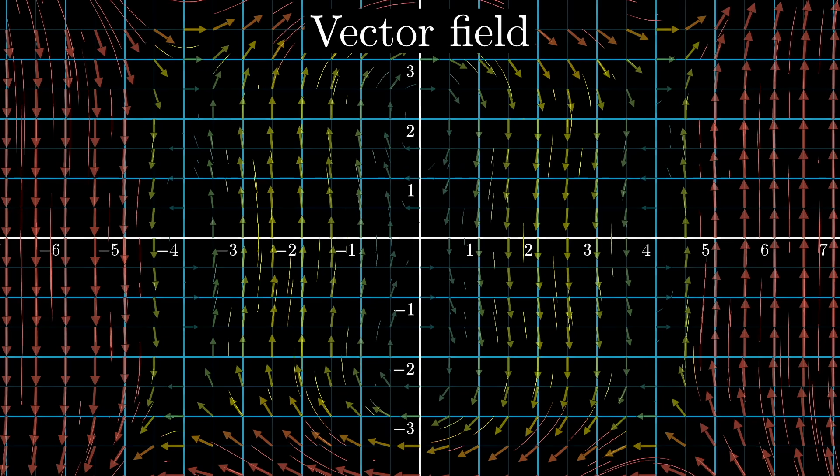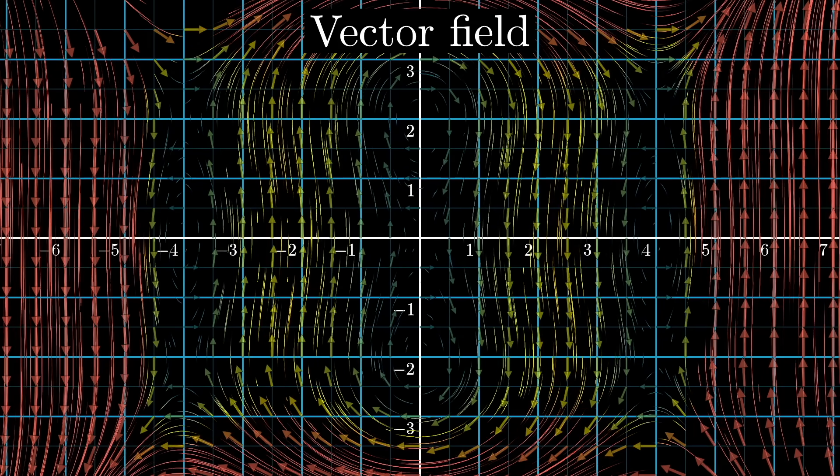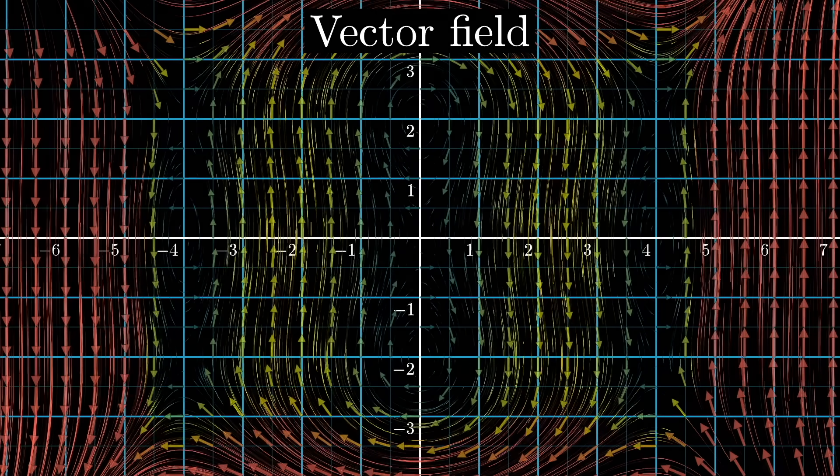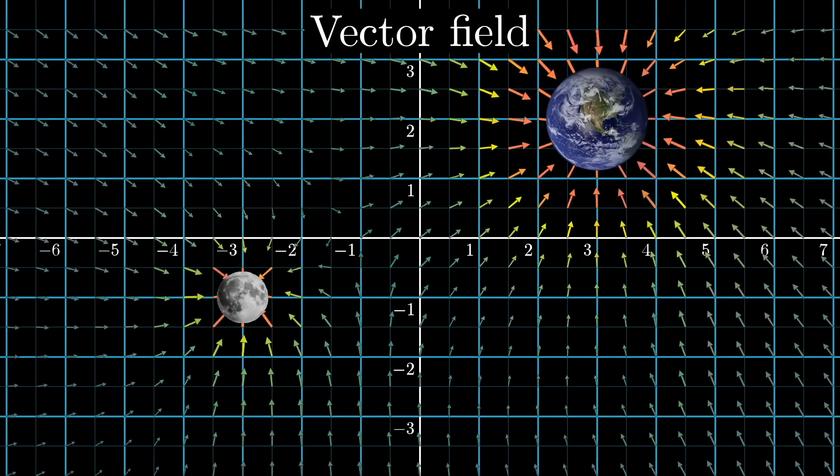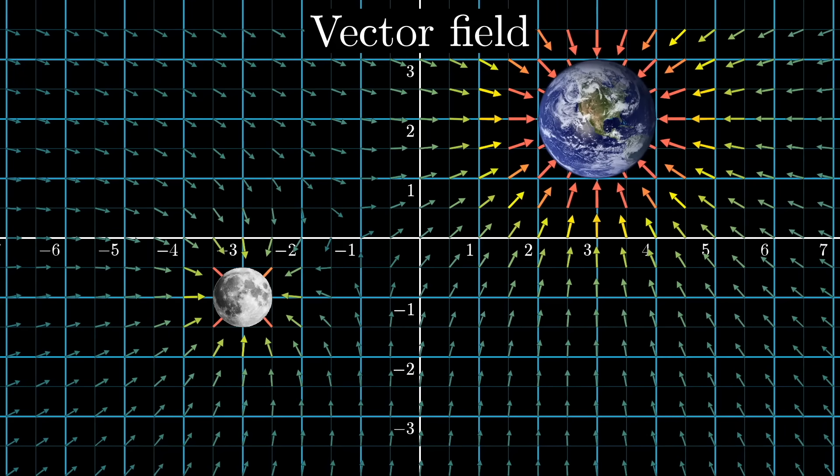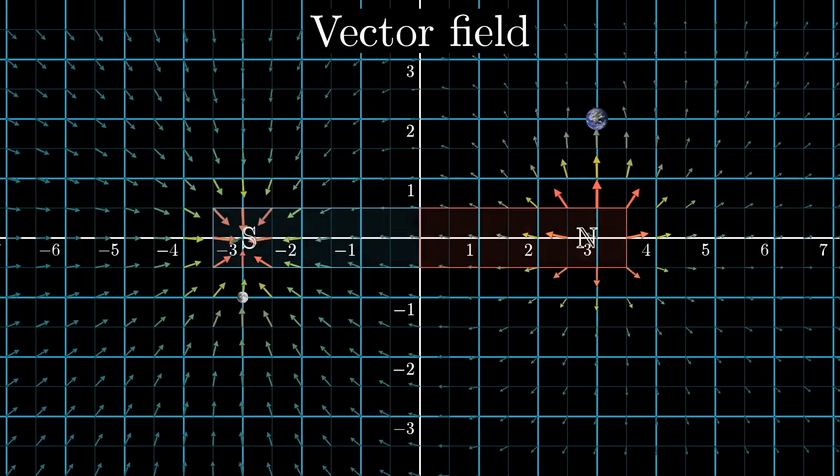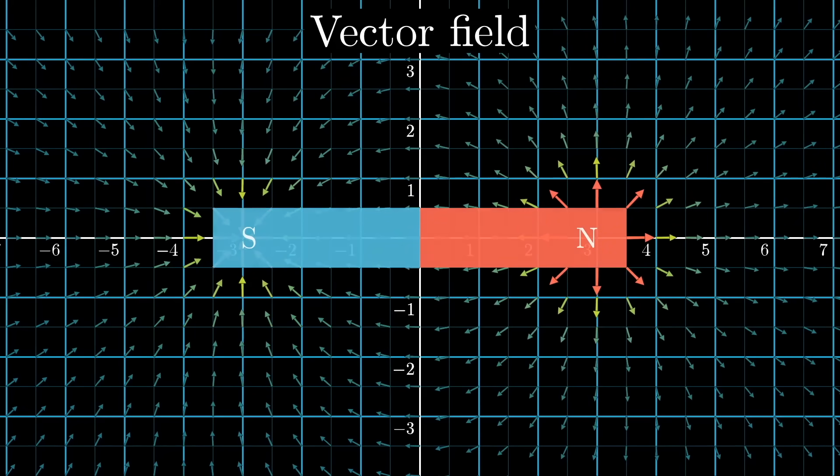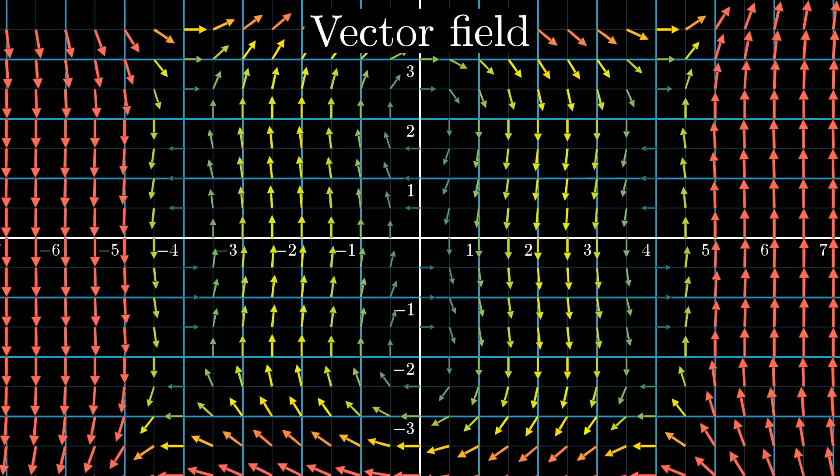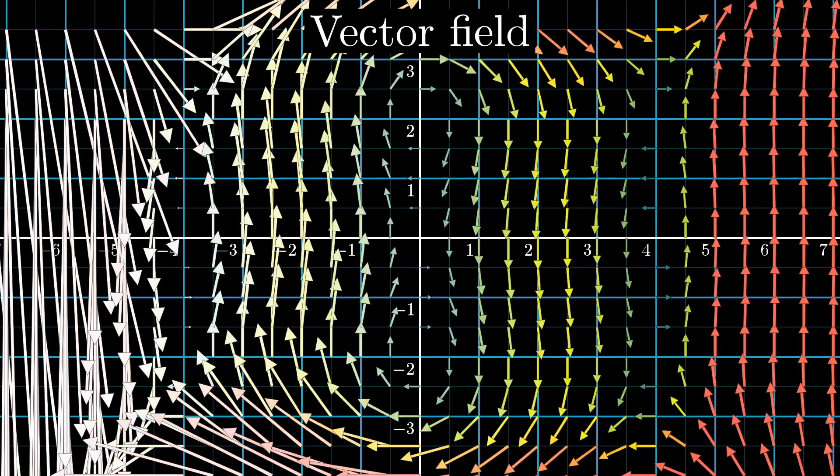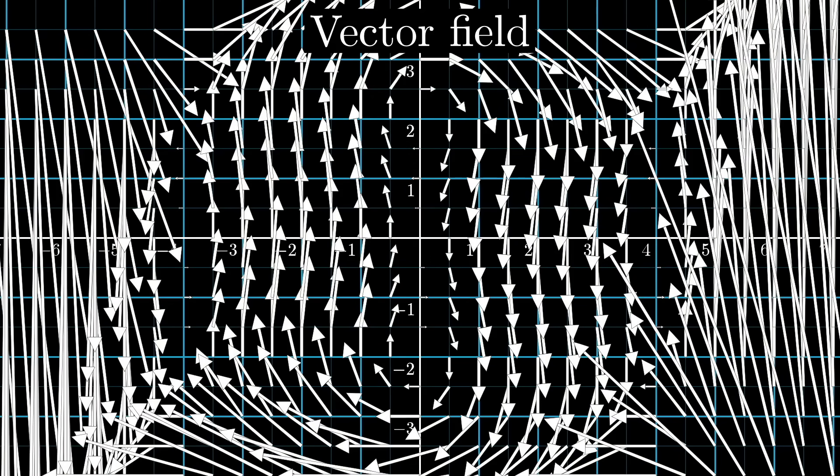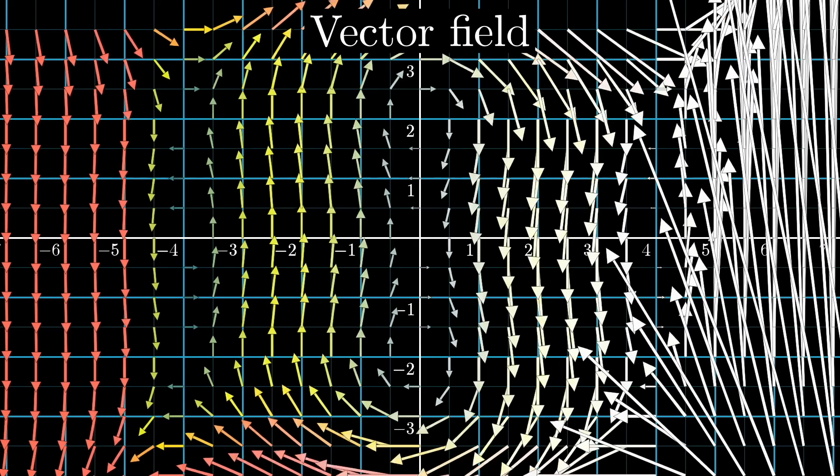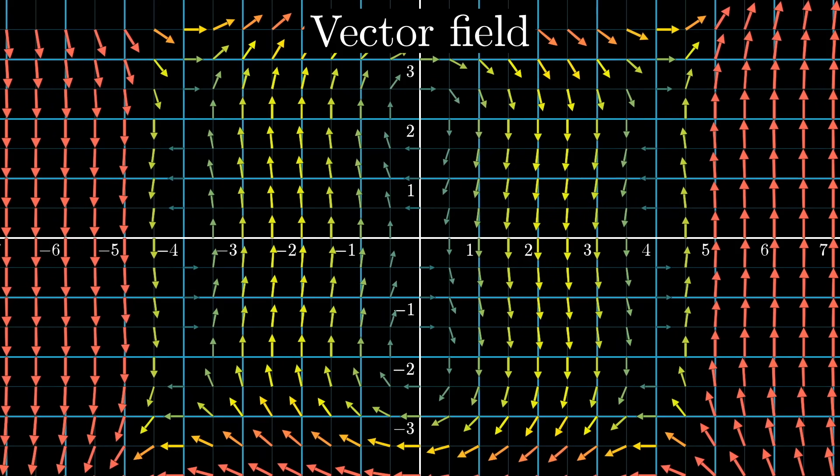Maybe those vectors represent the velocities of particles of fluid at each point in space, or maybe they represent the force of gravity at many different points in space, or maybe a magnetic field strength. Quick note on drawing these, often if you were to draw the vectors to scale, the longer ones end up just cluttering up the whole thing, so it's common to basically lie a little and artificially shorten ones that are too long, maybe using color to give some vague sense of length.